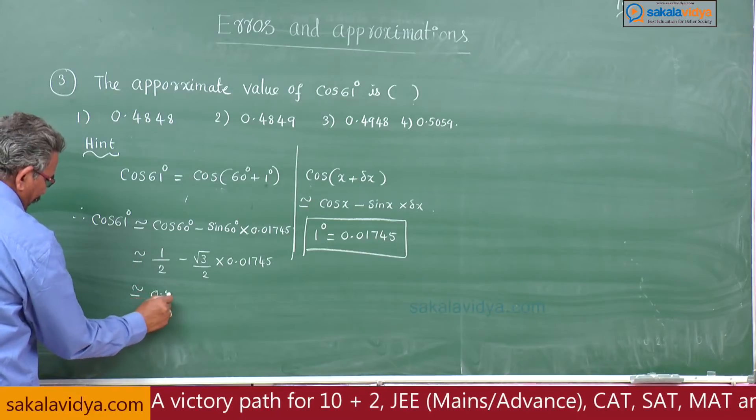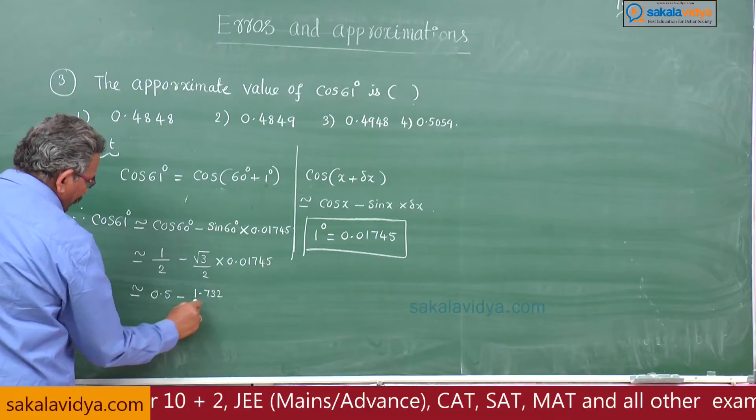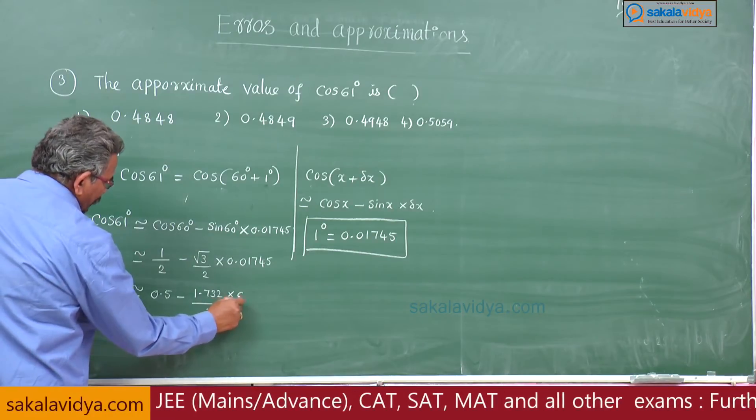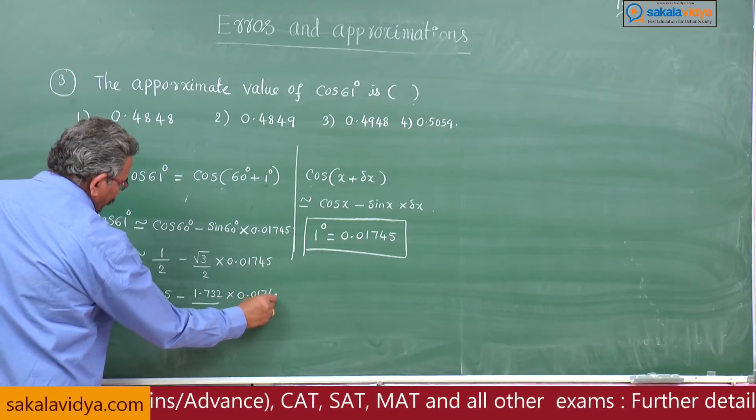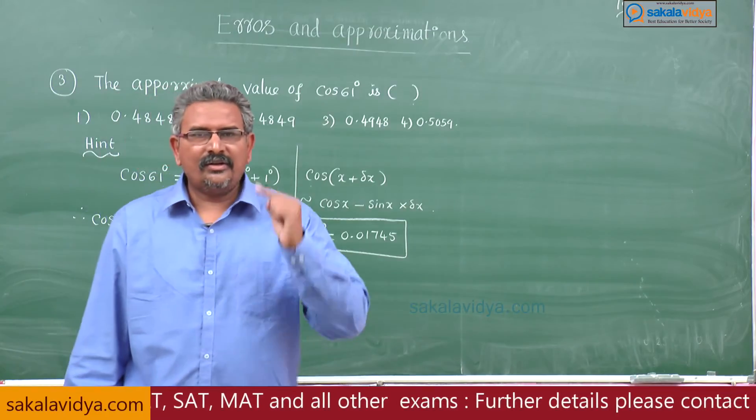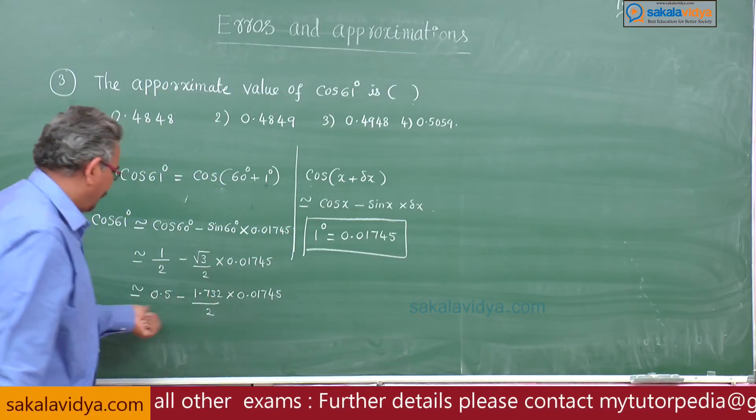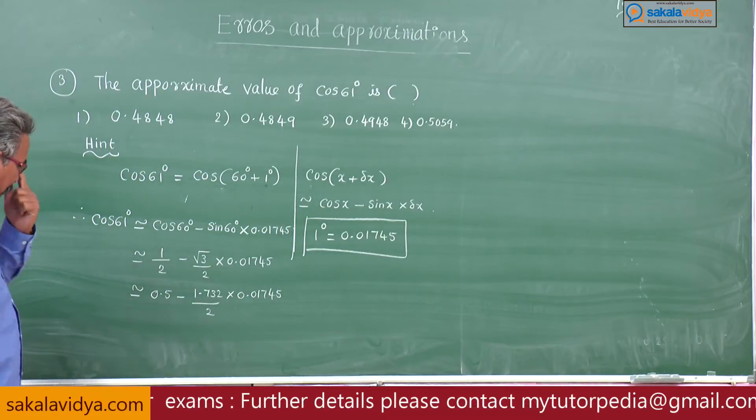1 by 2 is 0.5, root 3 is 1.732 by 2 into 0.01745. You are not at all allowed to use the calculator. Be careful while solving the calculations. This part is very very important.